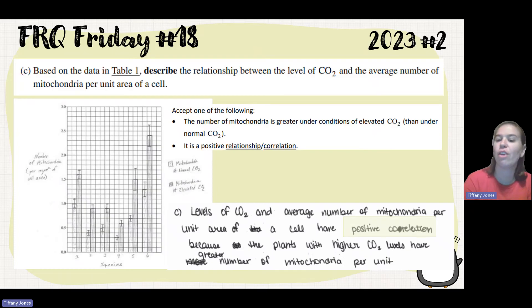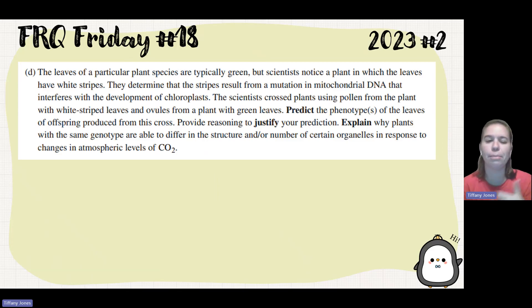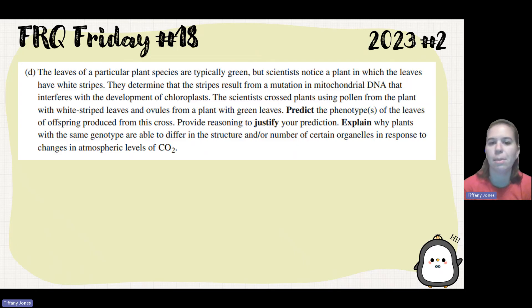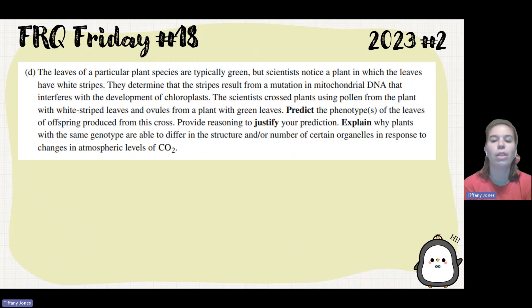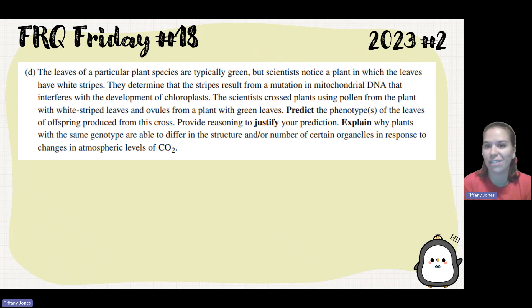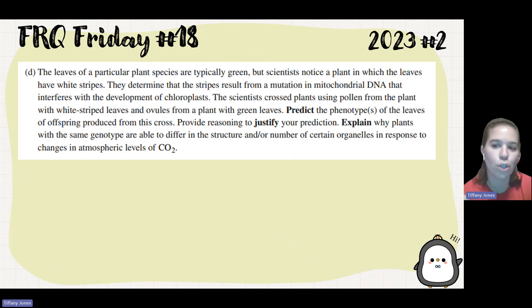Part D is the tricky one — they always put the hardest thinking question here. The scenario describes a plant species that is typically all green, but scientists notice a plant with white-striped leaves, determined to result from a mutation in mitochondrial DNA that interferes with chloroplast development. Scientists cross pollen from the white-striped plant with ovules from a green-leaved plant. Since it involves mitochondrial DNA, the key is identifying which plant provides the egg.